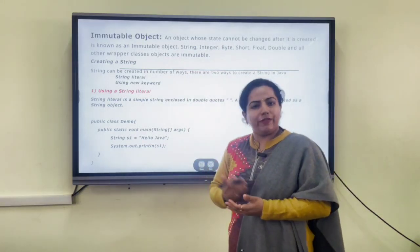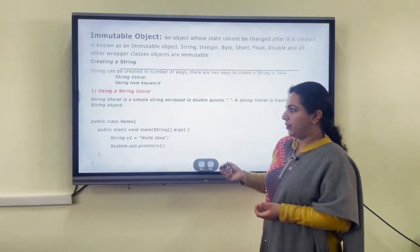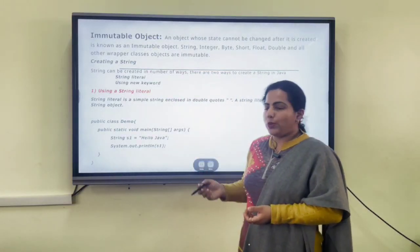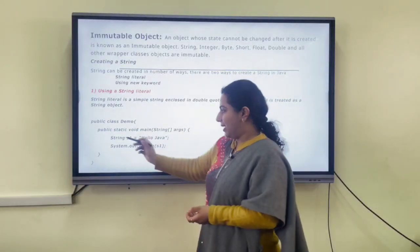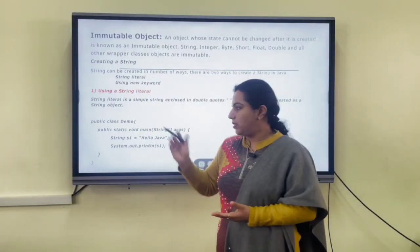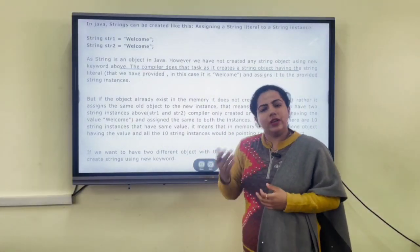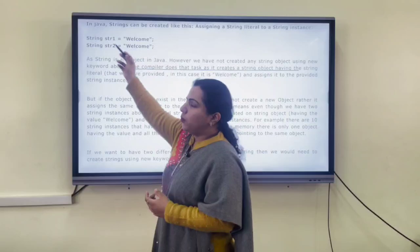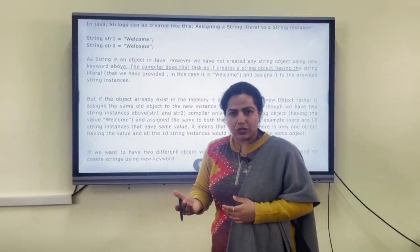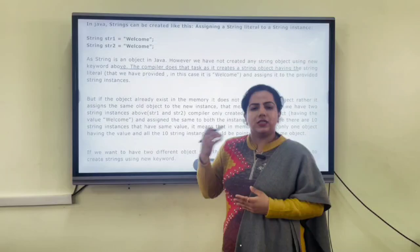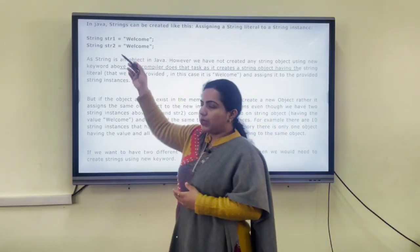There are two methods of creating strings. First is using string literals and second is using the new keyword. Using string literals, we simply place the value of the string within double quotes — for example, String s1 equals "Hello Java". If we represent the same value with two different string literals, it will not allocate different memory; it will create one instance and both strings will reference the same memory location.